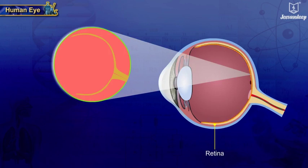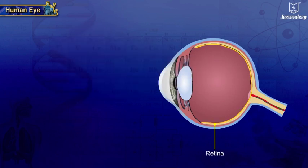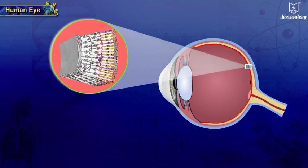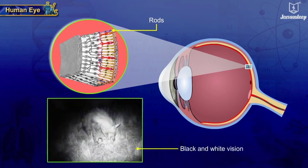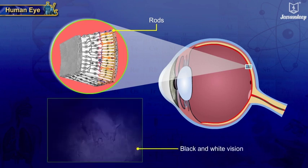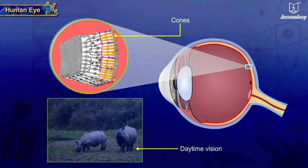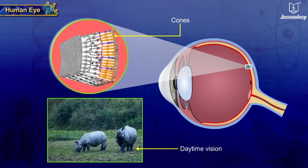The light-sensitive cells are of two types: rods and cones. Rods function mainly in dim light and provide black and white vision, while cones support daytime vision and the perception of color.